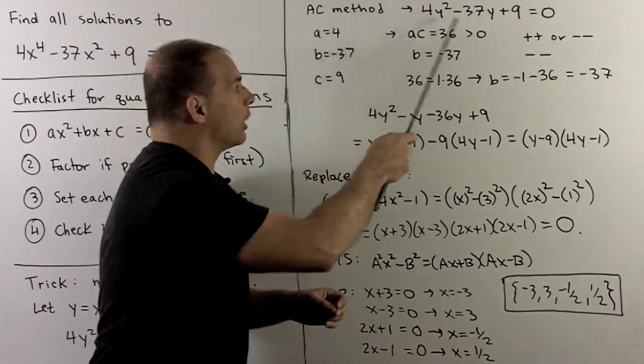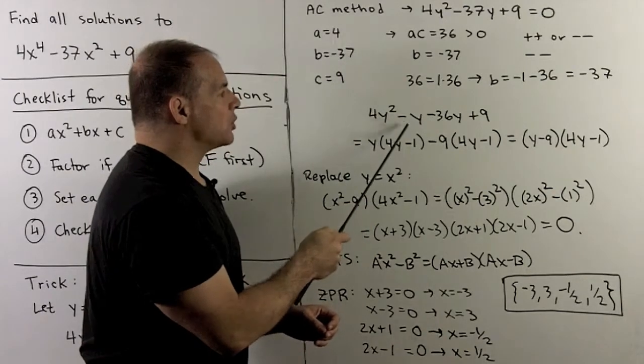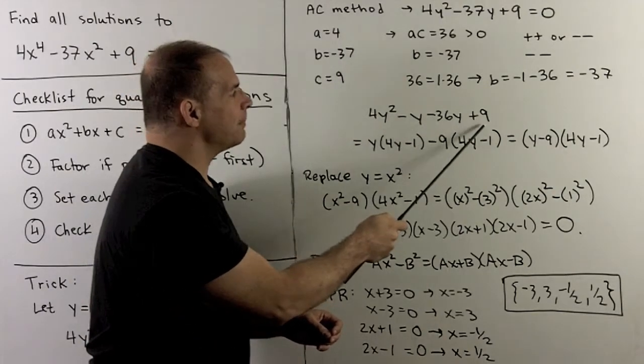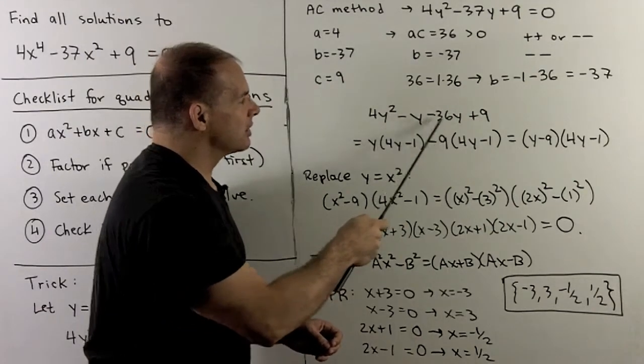Now, I rewrite our quadratic as follows. We use our split: 4y squared minus y minus 36y plus 9. I apply grouping to the first two terms and the second pair.